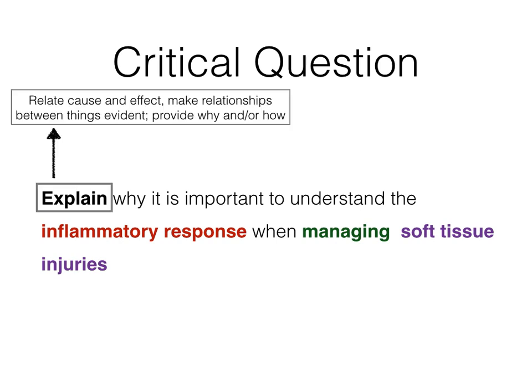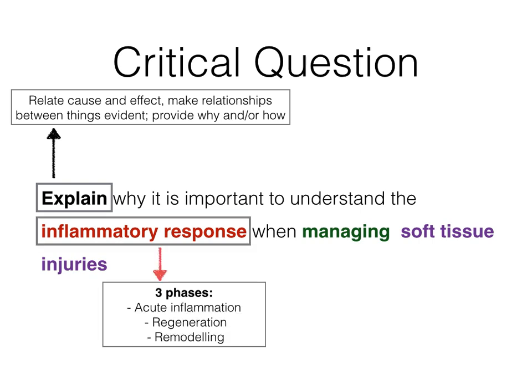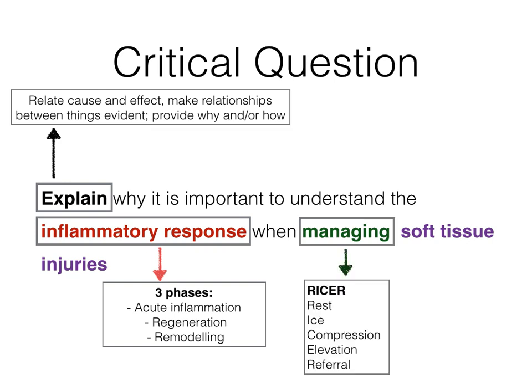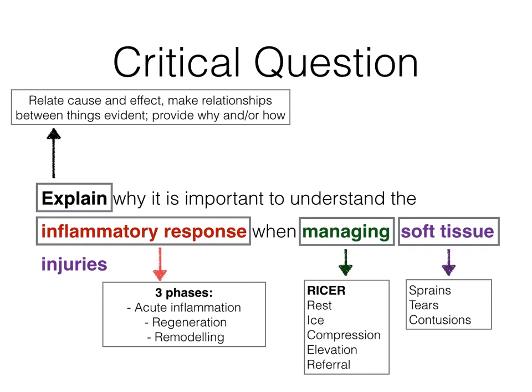The critical question encourages you to relate cause and effect, make relationships evident, and provide why and how — that is the 'explain' verb. You need to draw out the impact of understanding the inflammatory response, which has three phases covered in this presentation, and managing it — referring mainly to RISA: rest, ice, compression, elevation, and referral — in relation to soft tissue injuries, which include sprains, tears, and contusions. Thank you very much for listening.